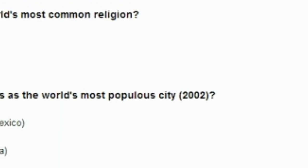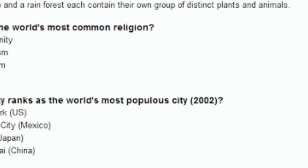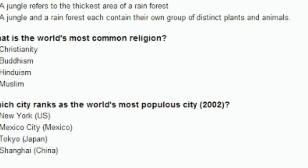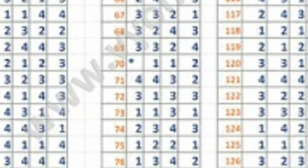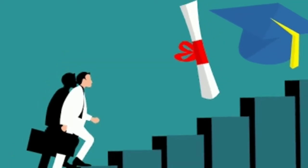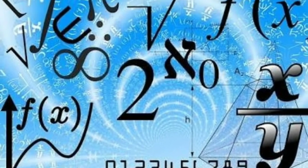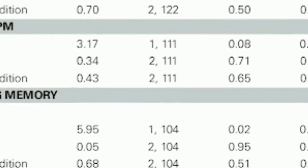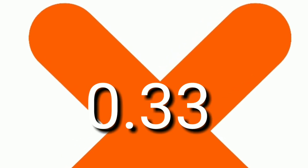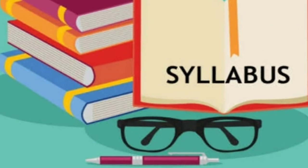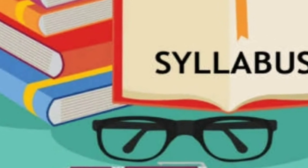Regarding the NDA exam pattern, objective type questions are asked, and an OMR sheet is given to answer questions. The exam mode is pen and paper type; only a black pen is allowed. Two and a half hours will be given for each paper — Paper 1 is Mathematics and Paper 2 is the General Ability Test. The medium of the exam is both English and Hindi, and 0.33 marks will be deducted for each wrong answer. For more details about marks and syllabus, please check the description below.